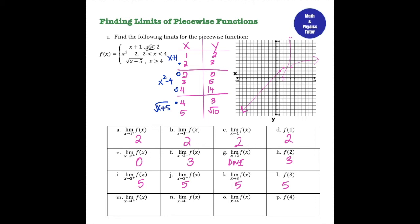It gets a little trickier at x equals 2 or x equals 4 where the function is changing from the line to the parabola or the parabola to the square root. For the limit as x approaches 4 from the right, I'm looking at numbers greater than 4, so the limit is 3. For the limit as x approaches 4 from the left, I'm traveling along my function approaching x equals 4 from the left and ending up at 14. Since the limit from the left is not equal to the limit from the right, the limit as x approaches 4 does not exist. For f of 4, the colored-in dot is from my radical function, so f of 4 is 3. It's not always necessary to graph the piecewise function — once you know what's going on it's easier to just plug into the appropriate piece as you go.